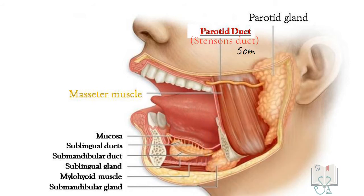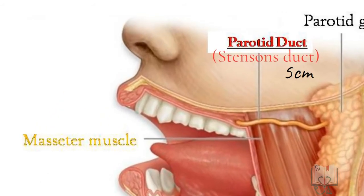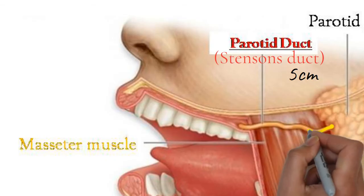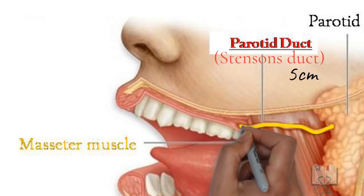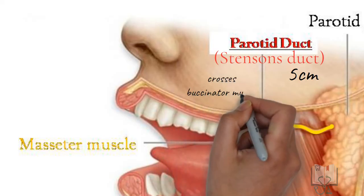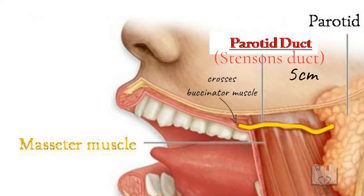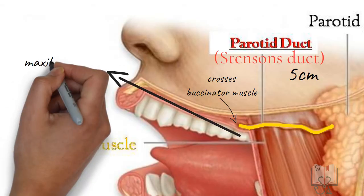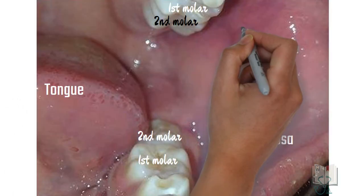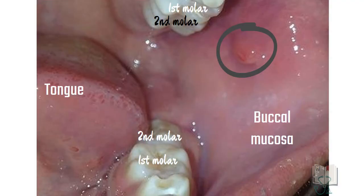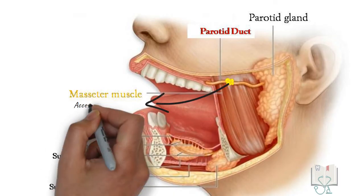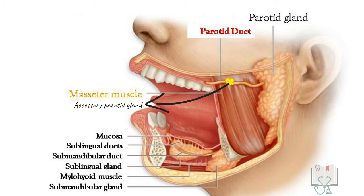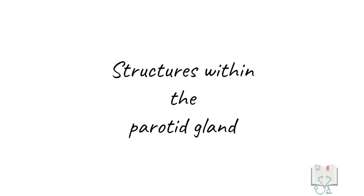The main excretory duct, called the parotid duct or Stenson's duct, is around 5 centimeters long. It emerges from the middle of the anterior border, runs forward along the superficial surface of the masseter, turns inward at its anterior border, and crosses the buccinator muscle. It opens opposite the crown of the second maxillary molar in the upper vestibule of the oral cavity. Sometimes a small salivary gland called the accessory parotid gland may be present in the middle of the duct.